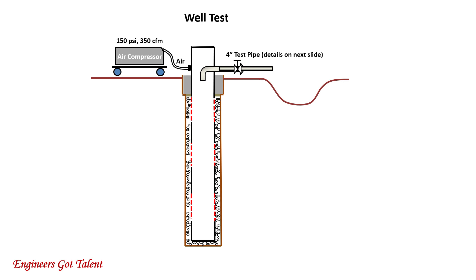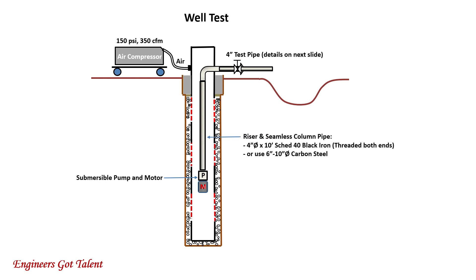Well testing is to measure the flow discharge of the well using a discharge test pipe with a piezometer tube and orifice plate. A submersible pump and motor is installed at the end of the riser pipe. The riser and seamless column pipe is 4-inch by 10-feet schedule 40 black iron, though you can also use 6 to 10-inch diameter carbon steel. When the pump is turned on, water is discharged through a 4-inch test pipe.